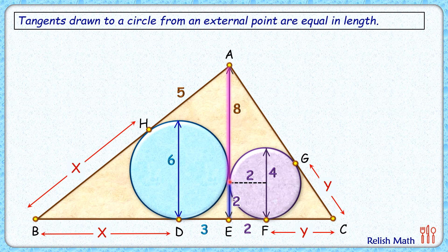This pink length of 6 cm is a tangent from point A to the purple circle, and thus the length of another tangent AG will be the same, 6 cm. Now we have all the side lengths of this triangle.